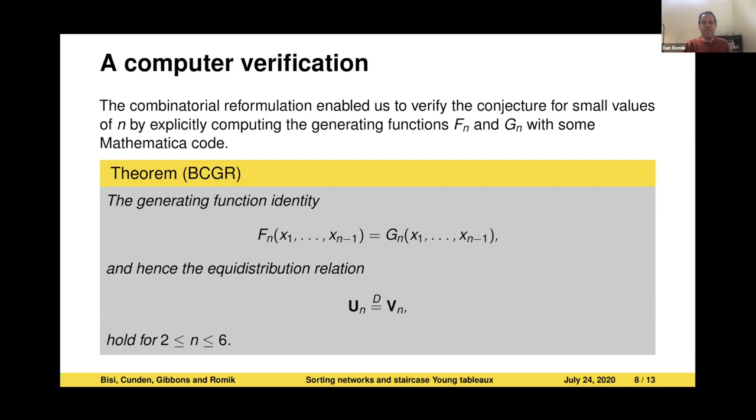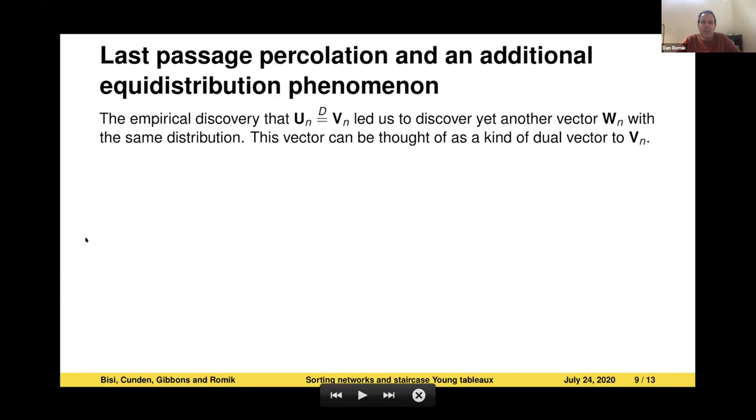For the last part of the talk, I want to mention a third identity, again in the same class of identities. Involving yet another vector, which I'll label W_n, and it turns out that W_n actually has the same distribution as both U_n and V_n, or at least conjecturally. We were at least able to prove that it has the same distribution as V_n. In fact, it's related to V_n in the sense that it appears as a kind of dual vector to V_n. That fact is still quite interesting and brings up some interesting combinatorics.